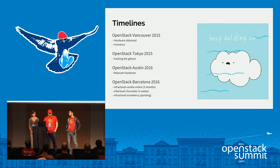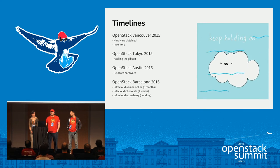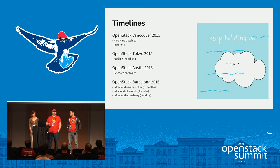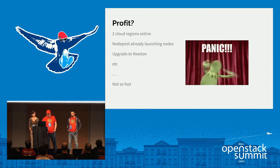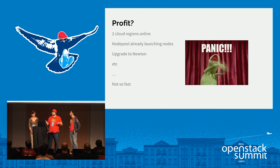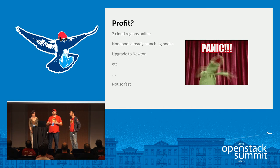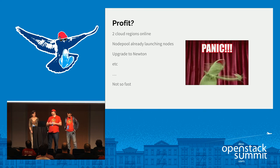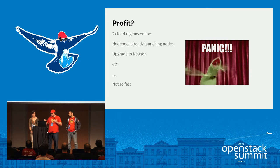Our third cloud, called strawberry, is pending and we're in the phase of bootstrapping it. Right now we have two clouds online, two regions, and NodePool already consuming those clouds. The next step is to upgrade to Newton because we're running Mitaka.